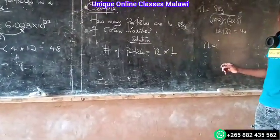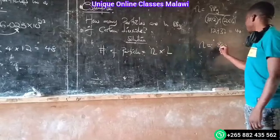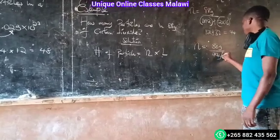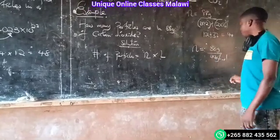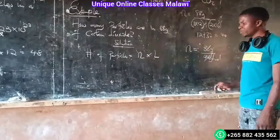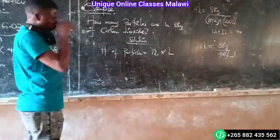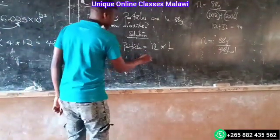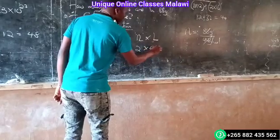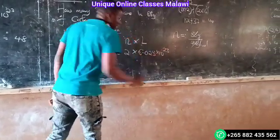I want to put this in the same way. So the number of grams — 88 grams — divided by 44 gives us 2 moles. So grams cancel out, and we get 2 moles. Two moles. And then we multiply by Avogadro's number — 6.023 times 10 to the power of 23.